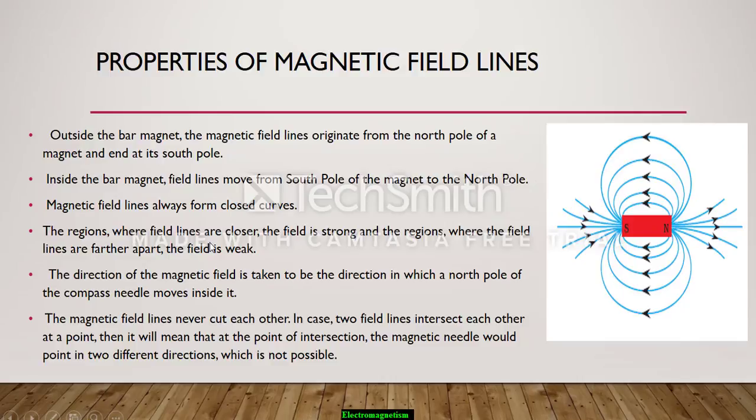The regions where magnetic field lines are closer, near the magnet there are closer field lines. So here they are strong and where they are far apart, there is a weak magnetic field.